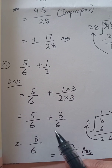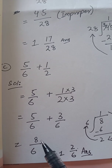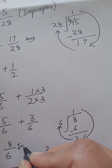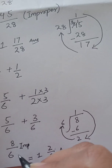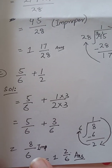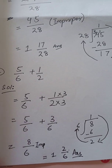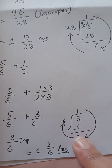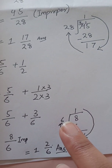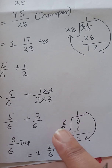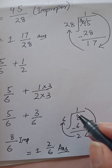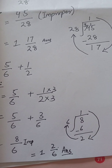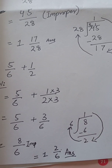Ab denominator same ho gaye. Five plus three karenge: eight ho jayega upon six — eight by six. Yeh improper fraction hai — improper mein answer kabhi nahi dena, usko mix mein change karna hai. Eight by 6 solve kiya toh answer aaya: 1 whole 2 by 6. Lekin usse bhi simplify karna hoga — final answer properly likhna hai.